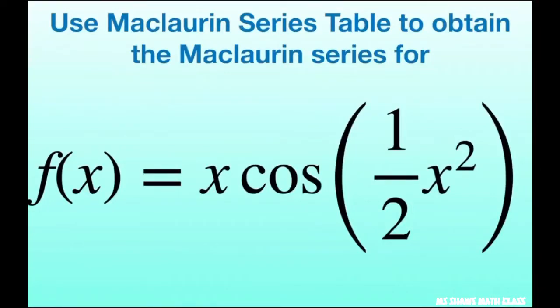Hi everyone. We're going to use the Maclaurin series table to obtain the Maclaurin series for f of x equals x times cosine of one half x squared.